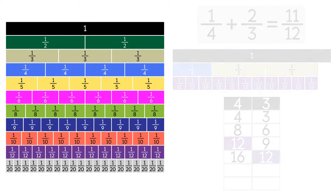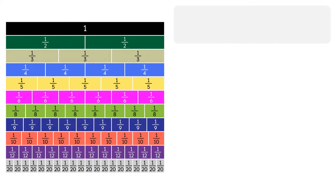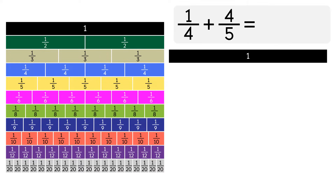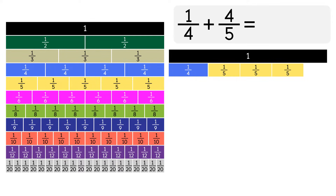Let's do another example: 1 fourth plus 4 fifths. We'll use 1 as the benchmark. Under the 1, we'll put a 1 fourth fraction strip. We'll also put 4 strips of 1 fifth to make 4 fifths.